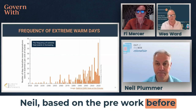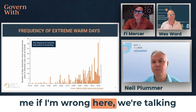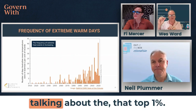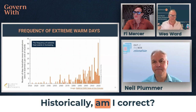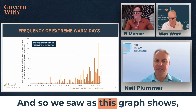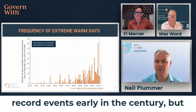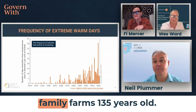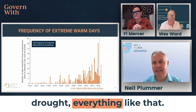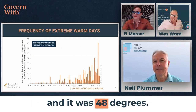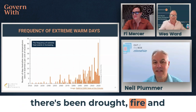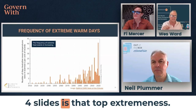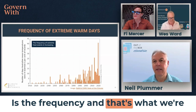When we're talking about extremes, we're talking about that top 1% — the 99th percentile historically. We saw very few of those 1% record events earlier in the century, but we're now seeing them much more frequently. A lot of people say there has been drought, fire, and famine since time immemorial — and that's true; our family farm is 135 years old and we've seen a lot. But what we're going to see across these four slides is that it's the extremeness — the frequency — that we've got to get our heads around.